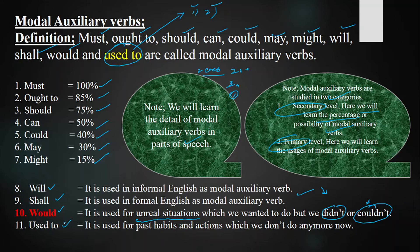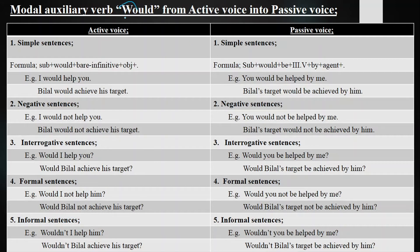Our main topic is modal auxiliary verb 'would' from active voice into passive voice. In active voice, the subject is the doer of an action; in passive voice, the subject is affected. When the subject takes the place of the object in passive voice, it is not called the object — it is called the agent, which tells us who does the action. The object takes the place of the subject and becomes the title subject. For example, in 'I would help you': I is the doer, you is affected. In passive, 'you' becomes the title subject and 'me' is the agent.